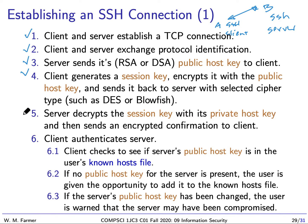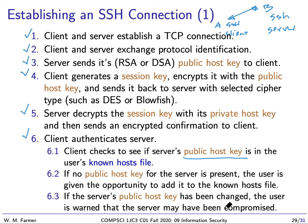The server decrypts the session key with its private key. Next, the client authenticates the server — making sure the server is really who the client thinks it is. It does this by taking the server's public host key and checking to see if it's in the user's known hosts file. If it is, everything's okay. If it's not, the user is given an opportunity to add this key. If it is present but the host key has changed, the user is warned that the server may have been compromised.